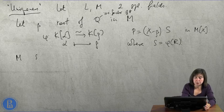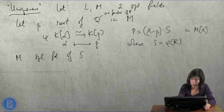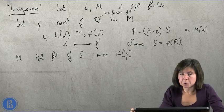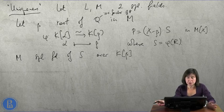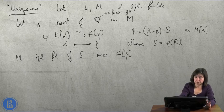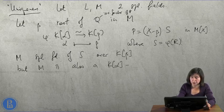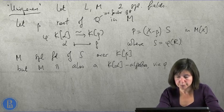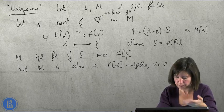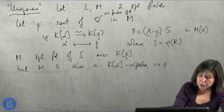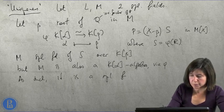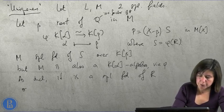Where s is phi of r. So, M is a splitting field of s over k of beta. M is an extension of k beta. But now, let's remember that we have also defined a field extension as an algebra. M is also a k of alpha algebra via phi. k of alpha acts on M via phi which identifies it to k of beta. And, as such,